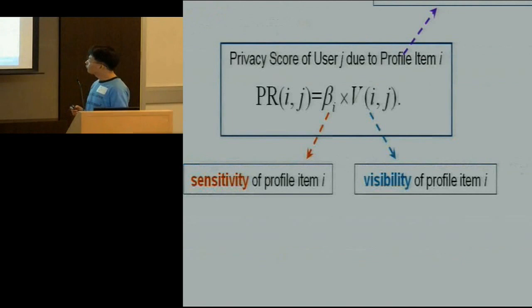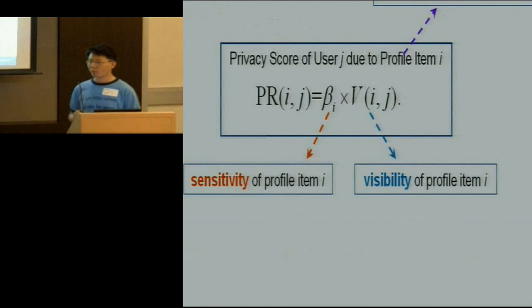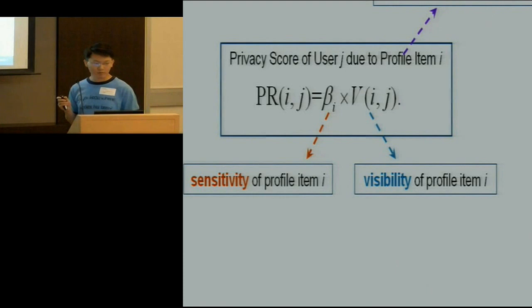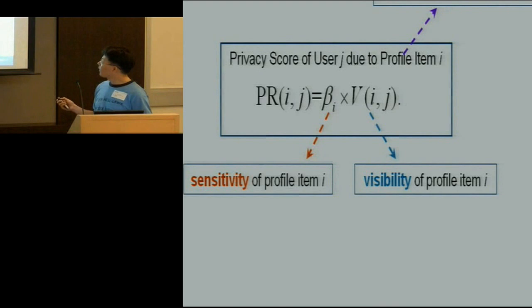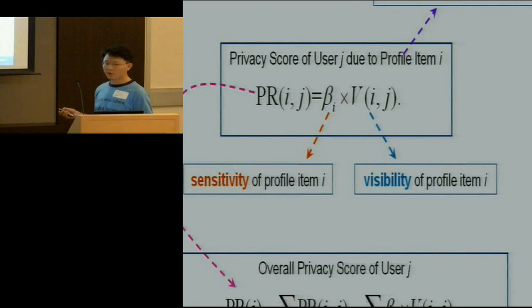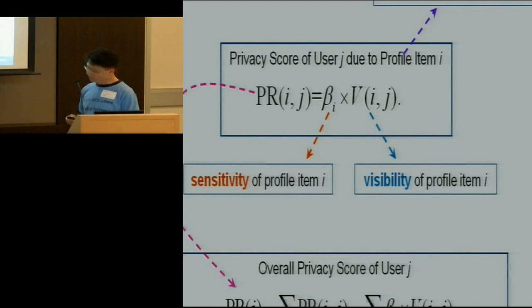The contribution of a single profile item to the overall privacy score is the product of the sensitivity of the information and the visibility of the information. A profile item can be your birthday, address, phone number, mother's maiden name, or even sexual orientation. The overall privacy score of a user is simply the summation of the individual contributions from each profile item — combining sensitivity and visibility for each item and summing them all.